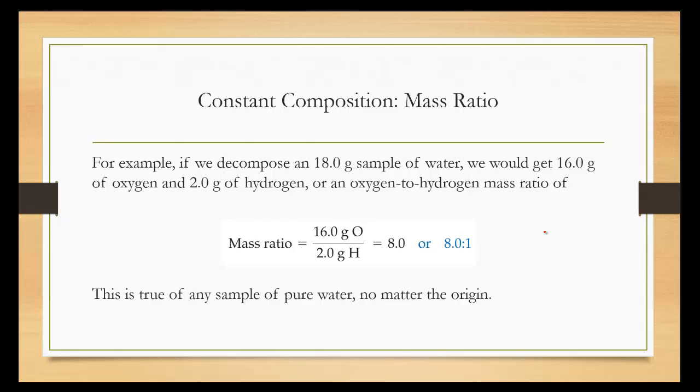For example, if we decompose 18 grams of water, we will get 16 grams of oxygen and 2 grams of hydrogen to give us an oxygen to hydrogen mass ratio of 16 over 2, or 8 to 1. This is true of any sample of pure water, no matter the origin of the water, no matter how the water came about.